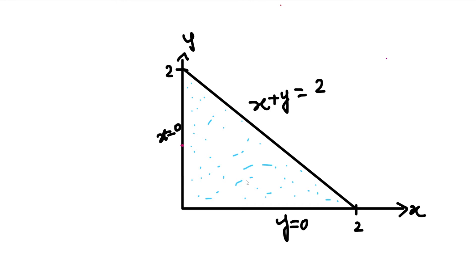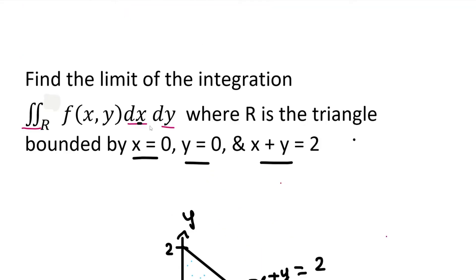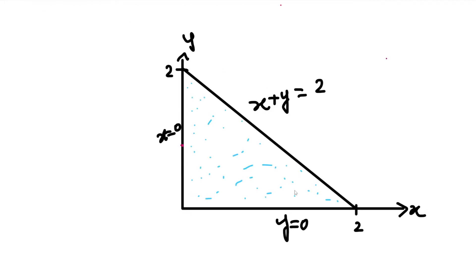So, we are going to set the x and y limits. Since we have dx first, then dy, we find the x limit first. Since x-axis is horizontal and y-axis is vertical, we use a horizontal strip. For the horizontal strip, the left-end touches the line x equal to 0, so x has a lower limit of 0.